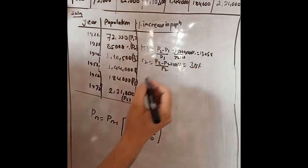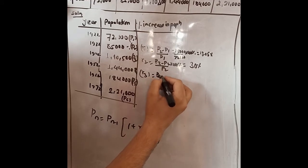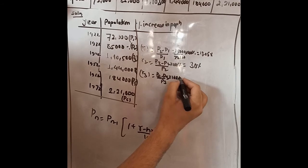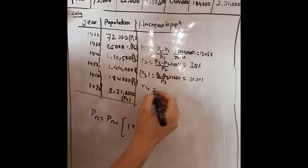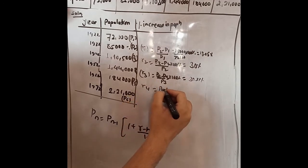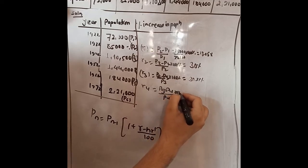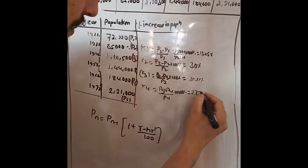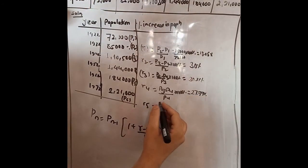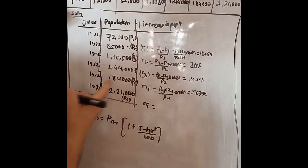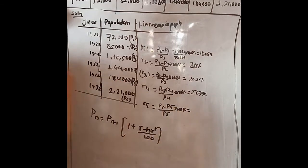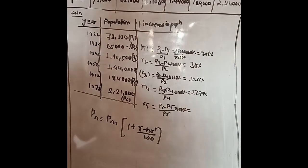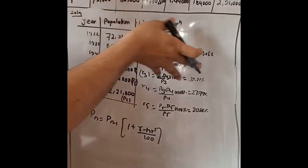Likewise, R3 equals (P4 − P3) divided by P3 into 100 percent. R4 equals (P5 − P4) divided by P4 into 100 percent. R5 equals (P6 − P5) divided by P5 into 100 percent. So we have assessed the increase in population for each decade.